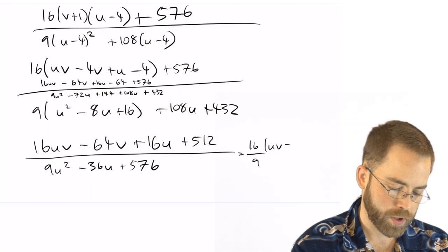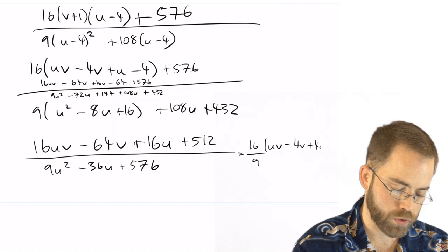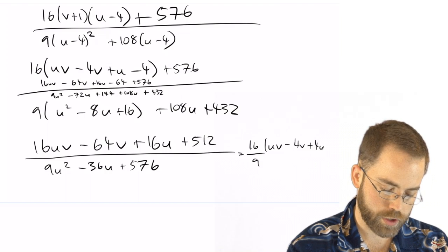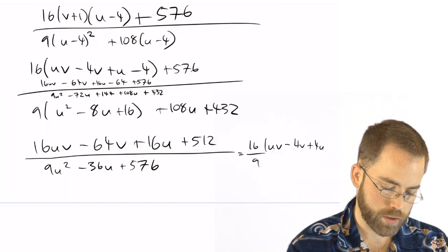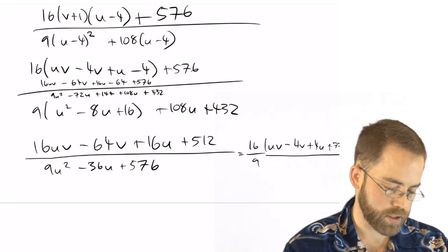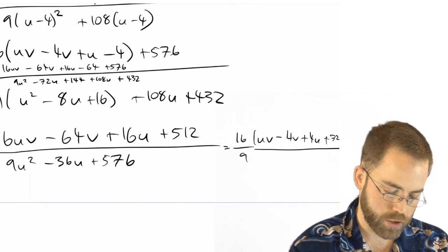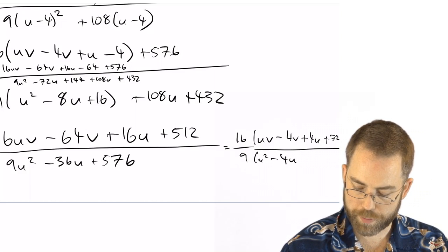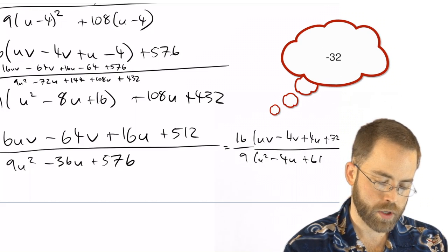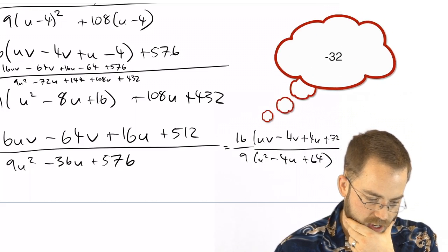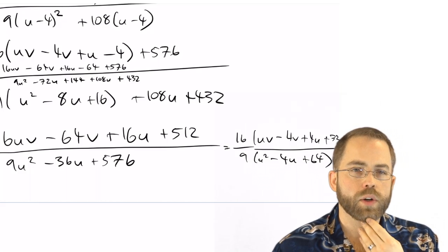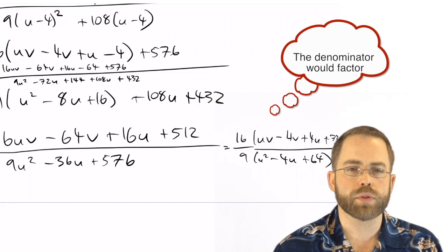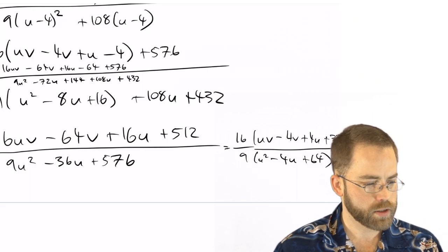uv minus 4v plus 4u, and 512 divided by 16 is 32, plus 32. And then over here, I had u squared minus 4u. And 576 divided by 9 is 64. So does that factor? We've got what multiplies to 64 and adds to negative 4. I don't think anything does that. And what I hope you can see is the difficulty involved here with fractions really needs you to keep on your toes.